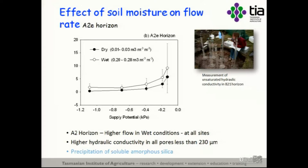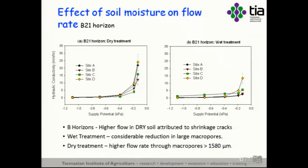In the A2 horizon — that sandy layer — again a very strange thing happens. The flow rate is significantly higher in the mesopores when it's wetter. When A2s are dry, they're firm and cemented; when wet, they actually flow like soup. What's happened is soluble silica has been deposited within the mesopores and micropores between the sand grains, slowing flow when dry until that silica goes back into solution. In the B2 clays, when dry, you get almost no flow through the micropores — then suddenly the macropores open and water pours through.